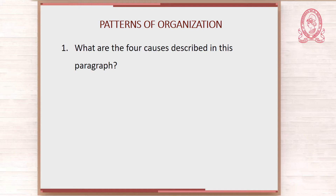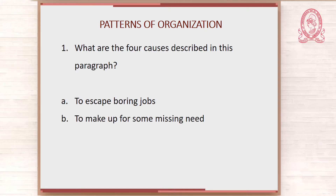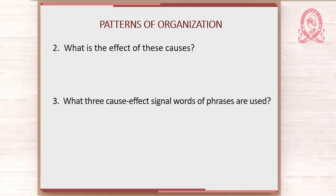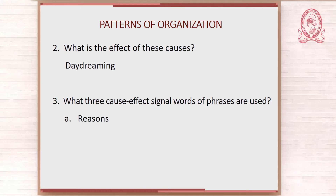The four causes described in the paragraph are: A) to escape boring jobs, B) to make up for some missing needs, C) to let go of anger, and D) to plan for the future. The effect of these causes is daydreaming. The three cause-effect signal words or phrases used are: A) reasons, B) cause, and C) explanation. Langan states that a paragraph's topic sentence often indicates its pattern of organization, so finding the topic sentence of a paragraph may help you decide on its pattern of organization.